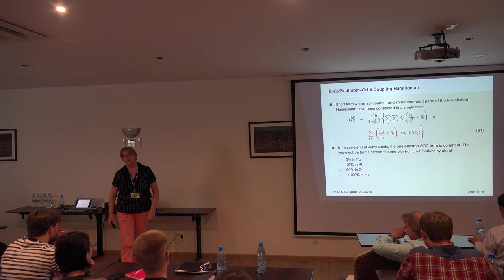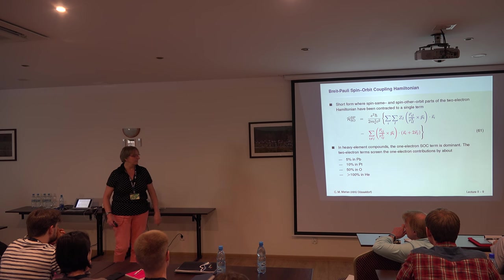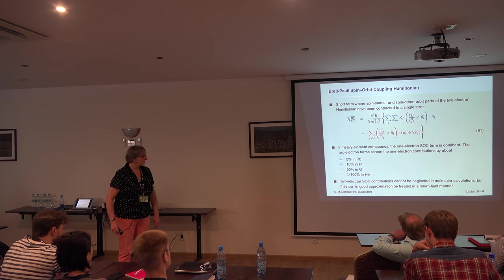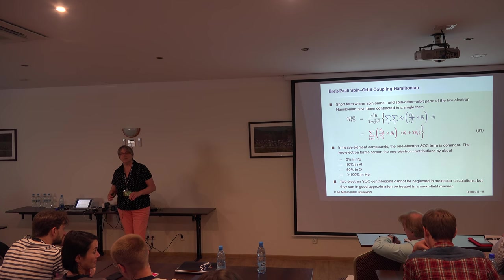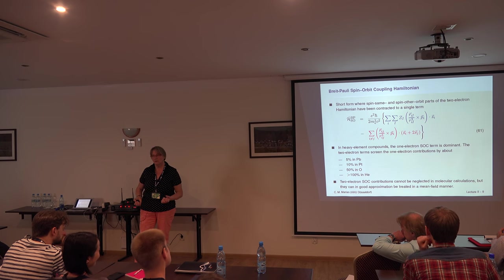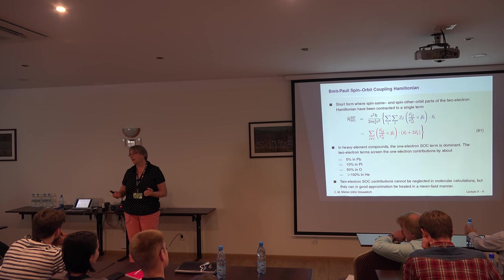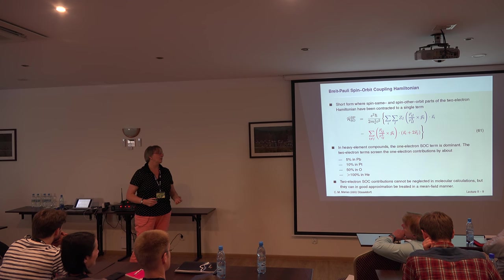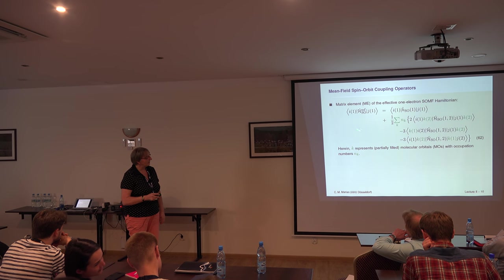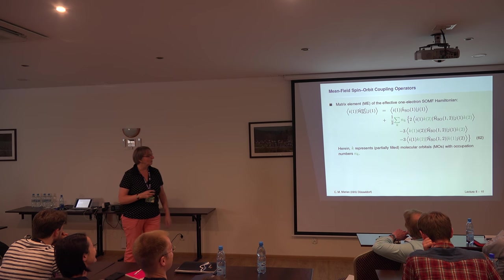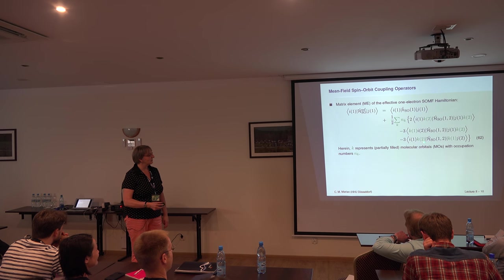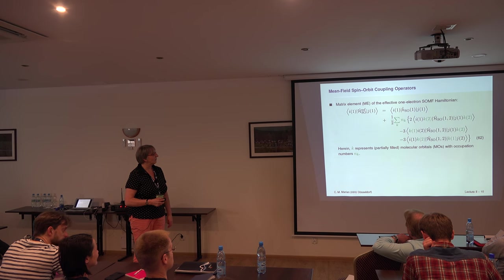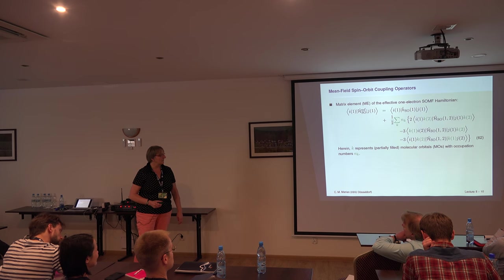For even lighter elements, the two-electron terms are dominant. These two-electron contributions cannot be neglected, but you can treat them in a mean-field manner — very similar to Hartree-Fock, where you calculate the average over the interaction of the two electrons. You sum up over all inner-shell electrons and their interactions, giving what is called the spin-orbit mean-field Hamiltonian.